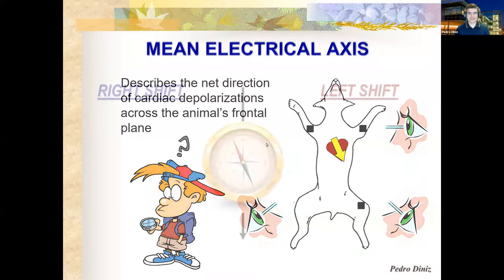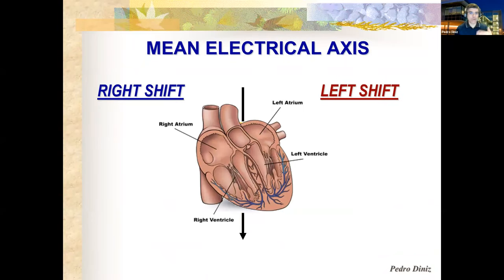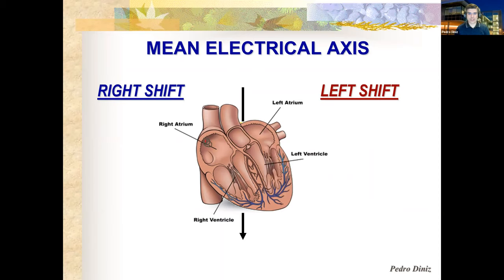Let's look at how we calculate it. Thinking like a compass, let's overlay the heart on this drawing. The normal depolarization comes from the sinus node to the AV node, cell by cell, and from the AV node through the conduction system towards the right and left sides of the heart. In dogs and cats, it reaches the subendocardial area under the endocardium of both ventricles.